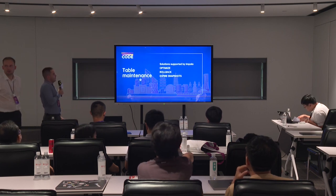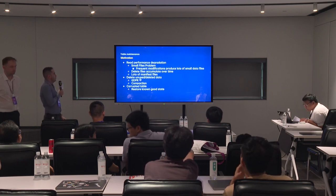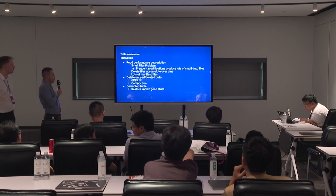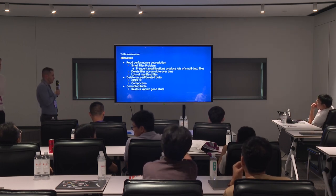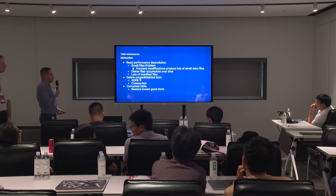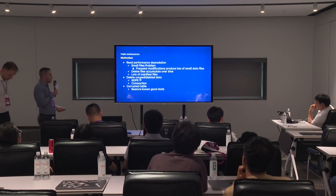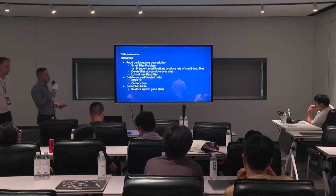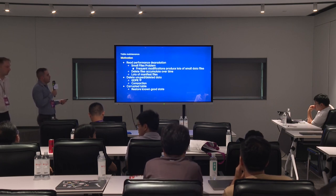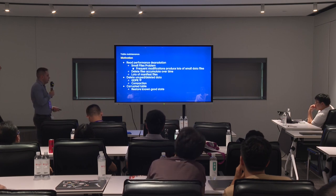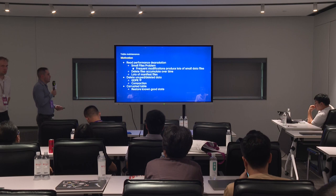Now let's talk about table maintenance. We have three kinds of issues we handle with maintenance operations. The first is read performance degradation — the small file problem. Frequent modifications create a lot of files and file descriptors, and the solution is compaction. The second issue is data regulations: if deleted data must be removed from the physical medium permanently, we need a mechanism for that. The third issue is a corrupted table — if an ETL job writes bad data, we need to know there is a good known state we can restore to.